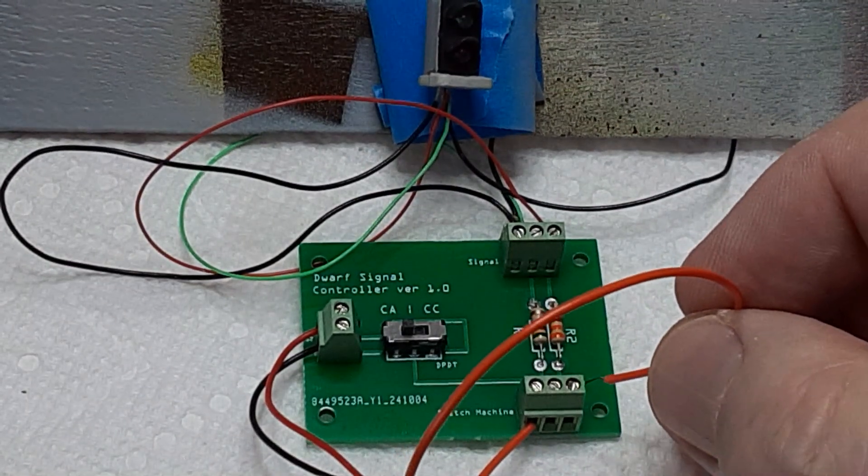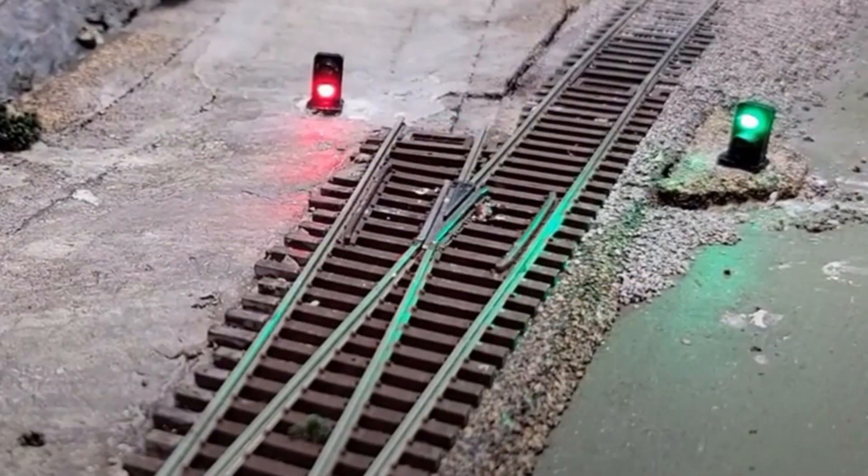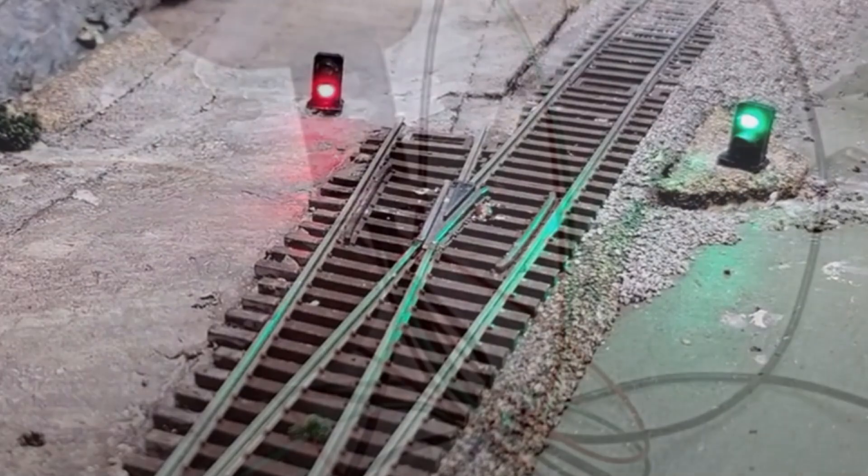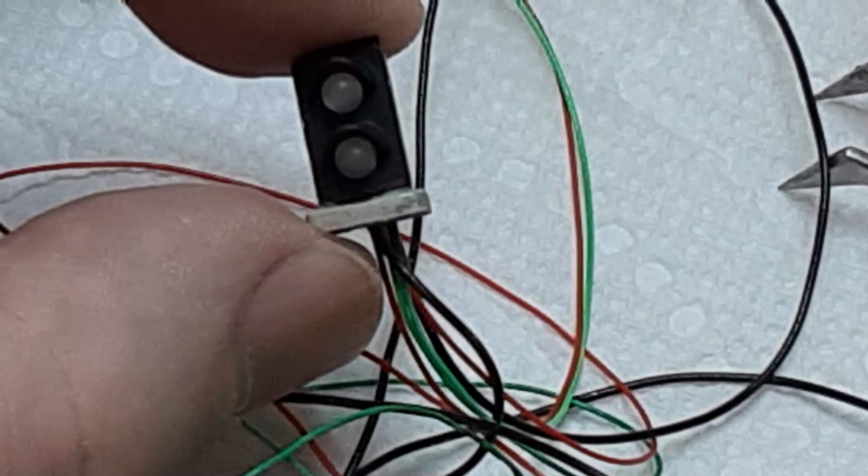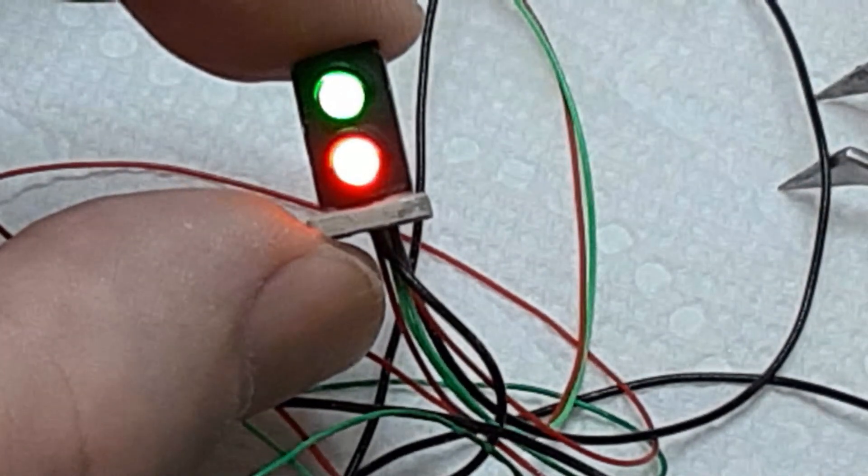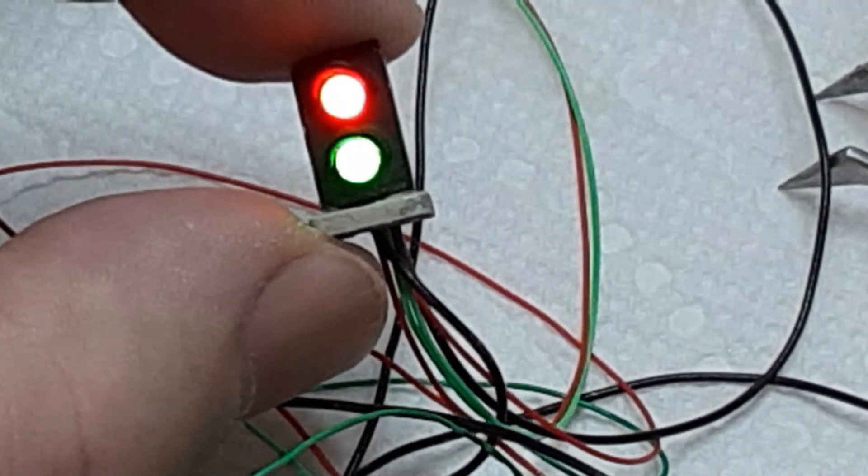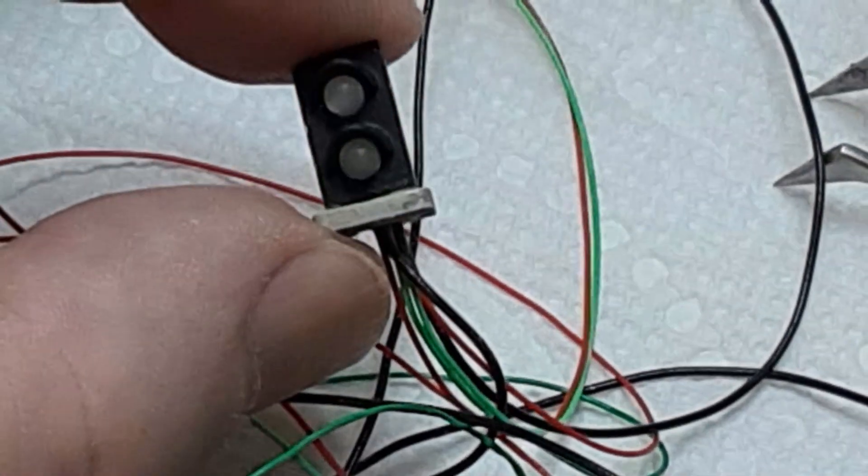You can take this control concept even farther. Some modelers install two dwarf signals facing the turnout points. One signal is always green and the other signal is always red. Which signal is green depends on the turnout position. This provides an easy way for an approaching train to determine the turnout position. Alternately, one might use two bicolor LEDs in one dwarf signal. A green over red aspect would indicate a straight route, while a red over green aspect would indicate a diverging route.